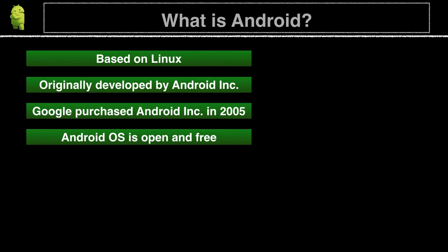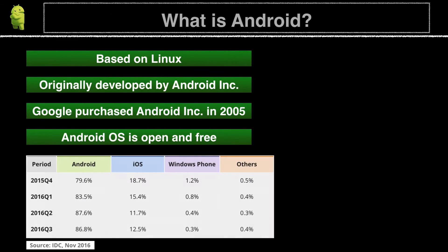This allowed manufacturers to use Android OS as the OS of their own phones and add their own extensions to Android and customize it according to their own needs. As shown in this graph of data from November 2016, Android has a very big market share and is thus very compelling for developers in the mobile sector.